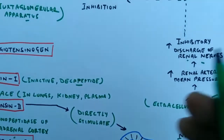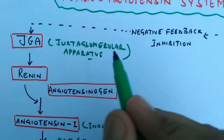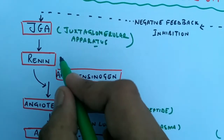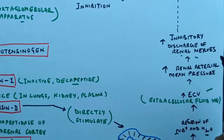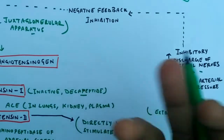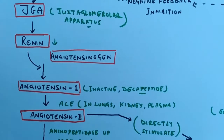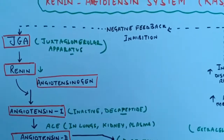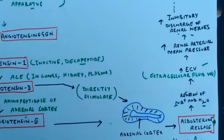This increased pressure stimulates the nerves in the renal area, and the stimulation of those nerves sends a negative feedback message to the juxtaglomerular apparatus to inhibit the synthesis of renin. So the stimulation of the renal nerves sends negative feedback to inhibit the secretion of renin.